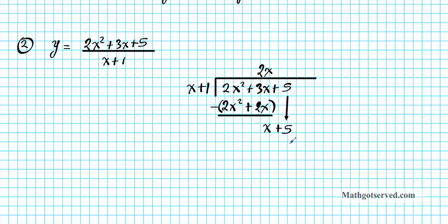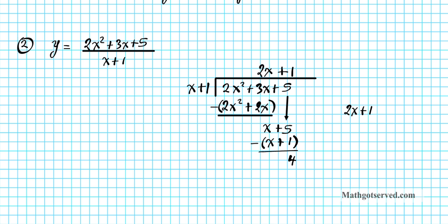We repeat the same procedure. x goes into x one time, so we have plus 1. Multiply: 1 times x is x, and 1 times 1 is 1. We subtract again: x minus x is 0, and 5 minus 1 is 4. So our result upon dividing is 2x plus 1, with a remainder of 4, written as 4 over the divisor x plus 1.